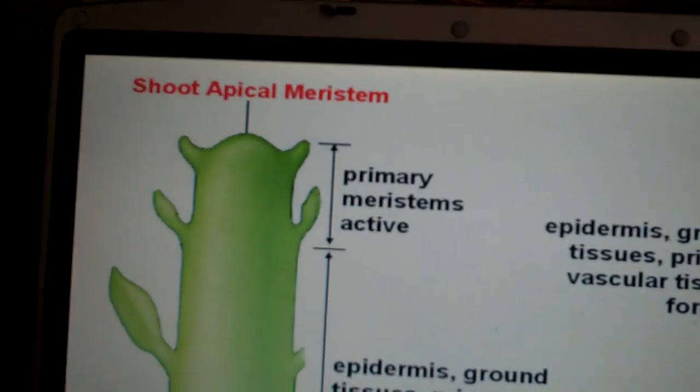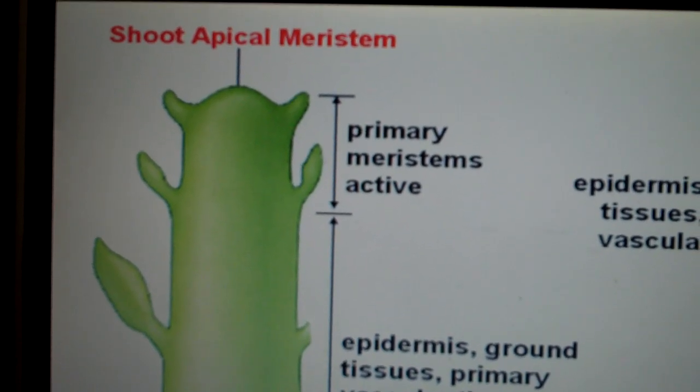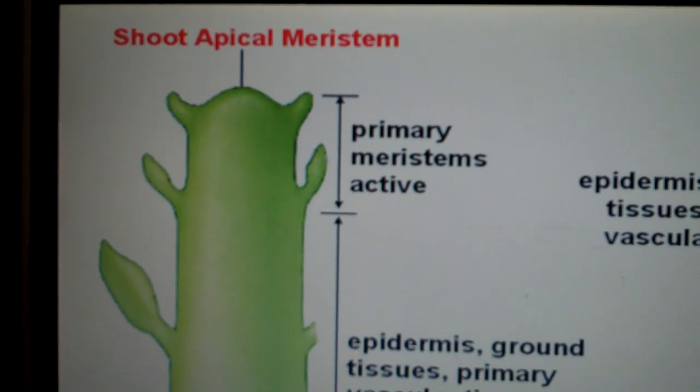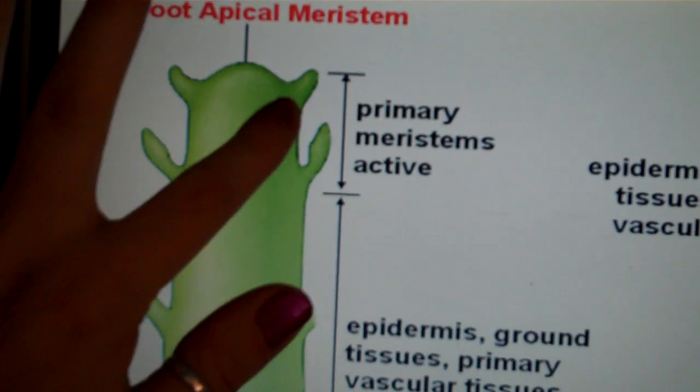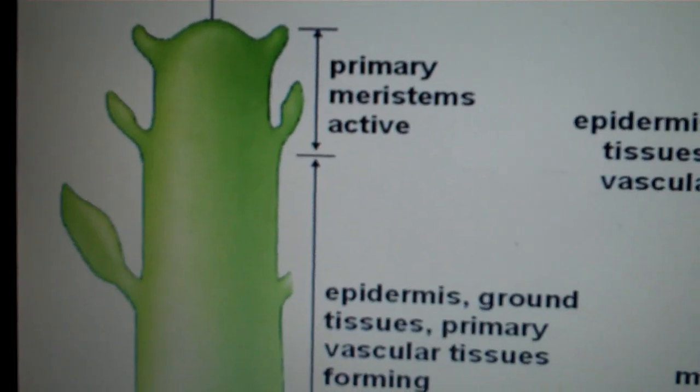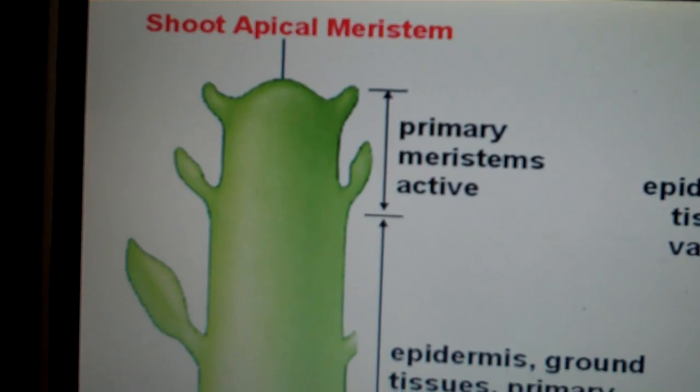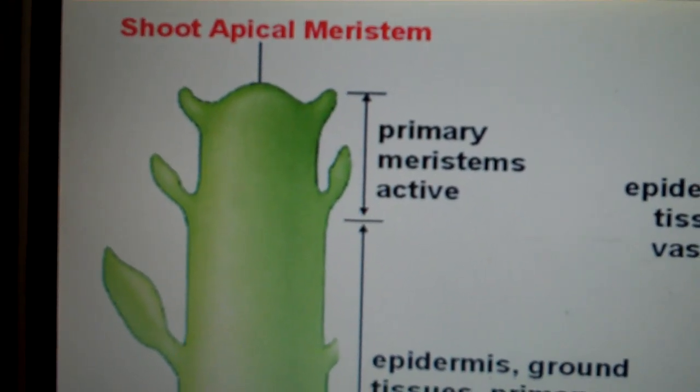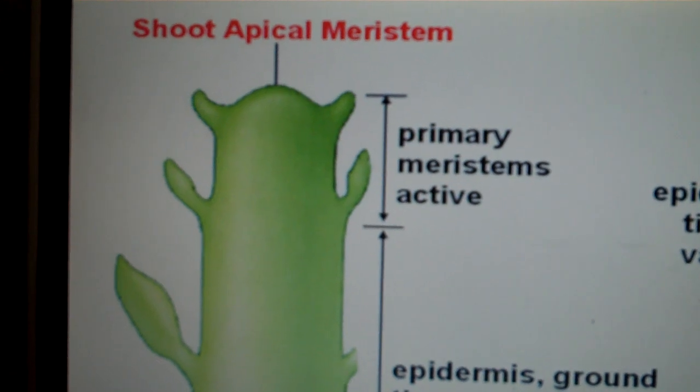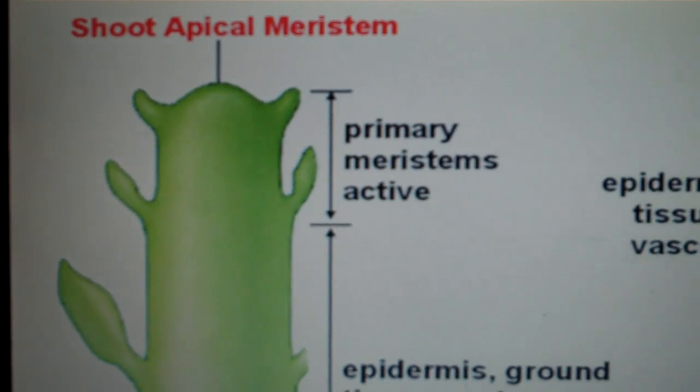Now, a meristem is a location on the plant where there's embryonic cells that are undifferentiated, meaning they can become any of the three types of plant tissues. That is where growth is going to occur. That's where the most mitosis is occurring.